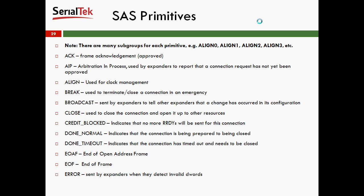Similar to Serial ATA, SAS is composed of primitives. Note that there are many subgroups for each primitive — for example, an align has Align 0, Align 1, Align 2, and Align 3. ACK is a frame acknowledgement meaning it's been approved. AIP, arbitration in process, is used by expanders to report that a connection request has not yet been approved. Align is used for clock management. Break is used to terminate and close a connection in an emergency. Broadcast is sent by expanders to tell other expanders that a change has occurred in its configuration. Close is used to close a connection and open it up to other resources. Credit Block indicates that no more 'readys' will be sent for this connection. Done Normal means the connection is being prepared to be closed — essentially saying we're just about done and the connection will close soon.